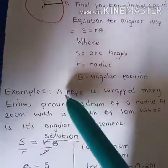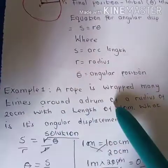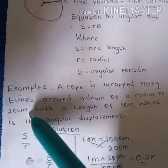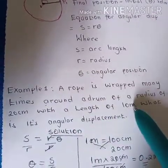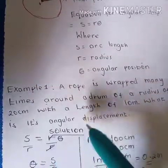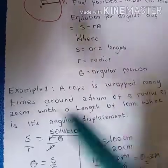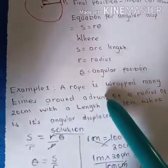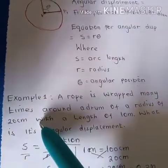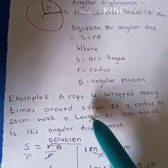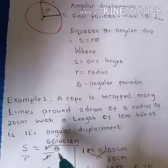Example 1: A rope is wrapped many times around a drum of radius 20 centimeters with a length of 10 meters. What is its angular displacement?